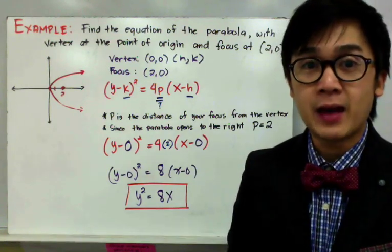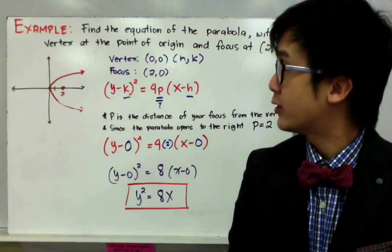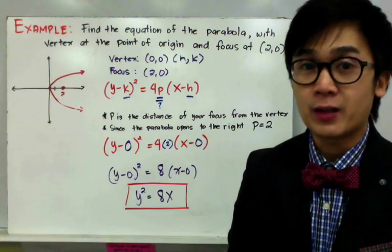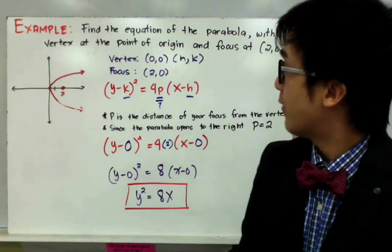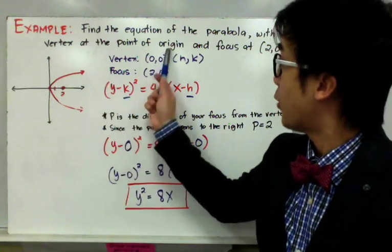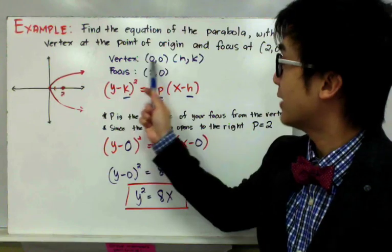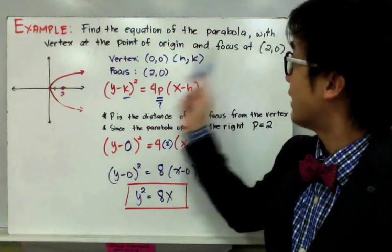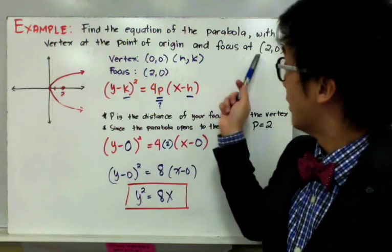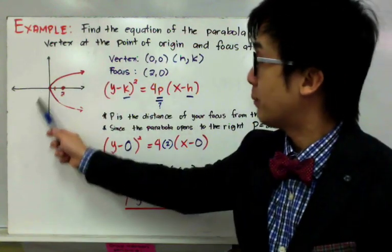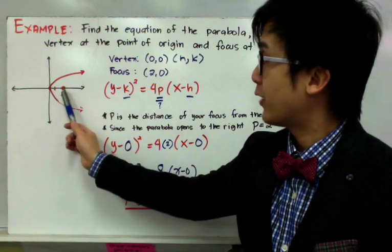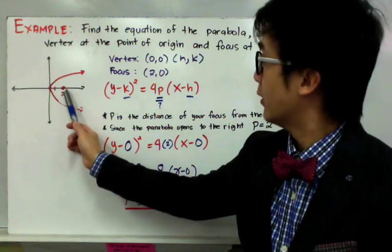The first step in analyzing any conic section is to sketch the graph of the given parts. In this case, the given parts are the vertex and the focus. Since the vertex is at the point of origin — vertex at (0, 0) — and the focus is at (2, 0), this is the look of your parabola, with vertex at (0, 0) and focus at (2, 0).